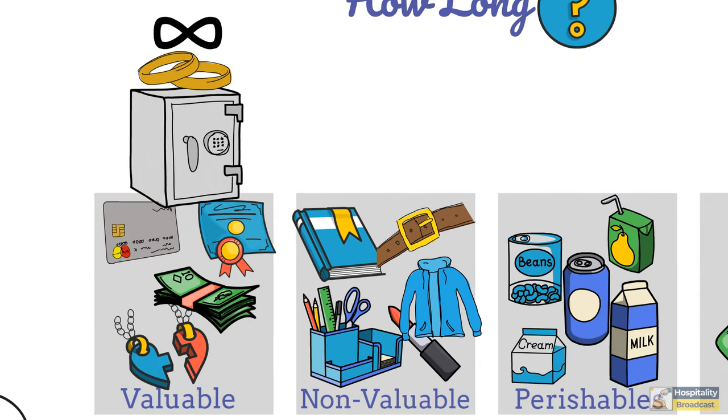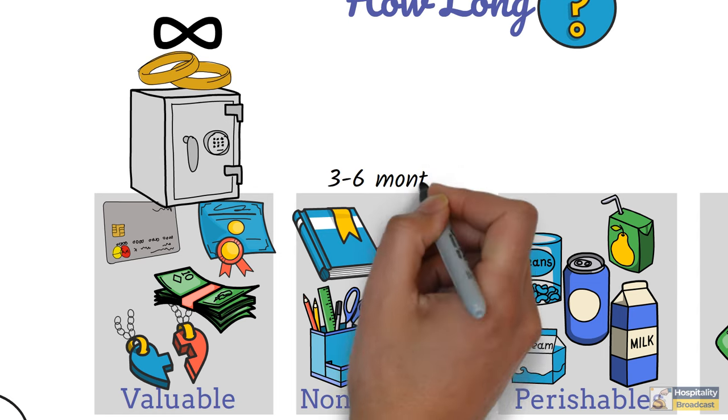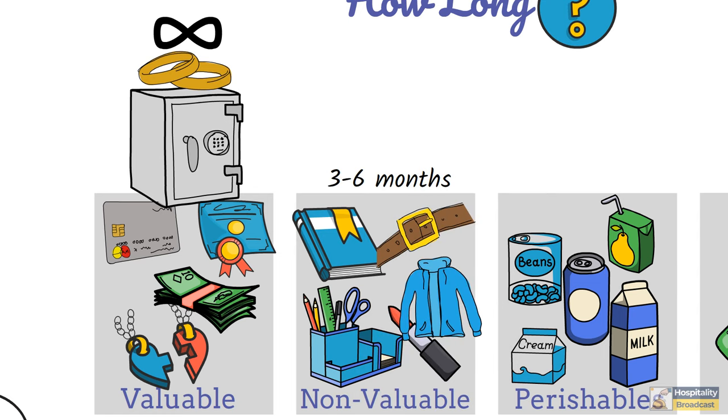Housekeeping retain non-valuable items for about 3 to 6 months, clothes for 3 months and electronics might be kept up to 6 months.